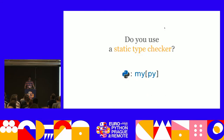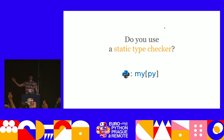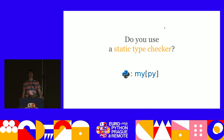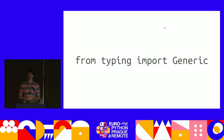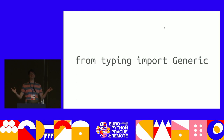Hello everyone. Before we start, could I get a show of hands: who here uses a static type checker like MyPy? Who doesn't? All right, lots of people do, good. Secondly, who here has come across typing.generic? It's in the standard library. About 20% of hands. Of those, can you leave your hand up if you understand it well? Three people. All right, I'm definitely talking to the right group here.